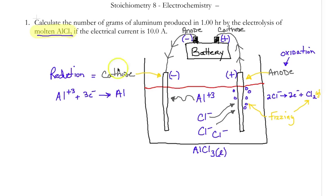And the amperage in our electrolysis is 10 amps. So before I can get to the math, I want to make sure we definitely understand the setup here.